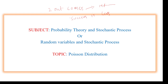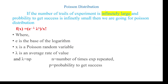Even if you take binomial distribution, the binomial condition is it should have only two outcomes — the number of trials can be more or less, it does not matter. But here the Poisson condition is it should have two outcomes, the number of trials are infinitely large, and the probability of success is very small. Then we use Poisson distribution to calculate the probability.